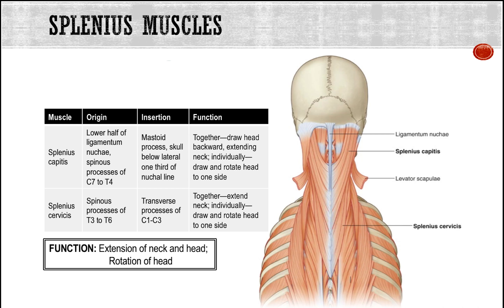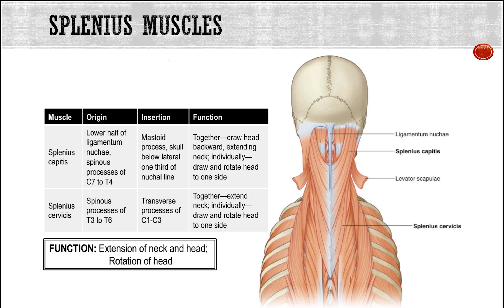Splenius cervicus is a bit deeper and more inferior. Its origin is the spinous processes of T3 to T6, and it inserts onto C1 to C3. It functions in extending the neck and also helps rotate the head from side to side. These two splenius muscles really do work together.